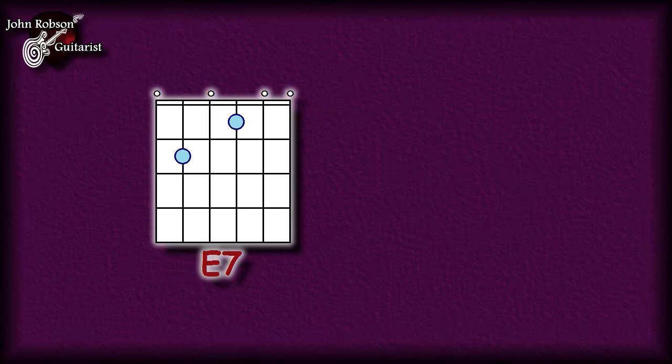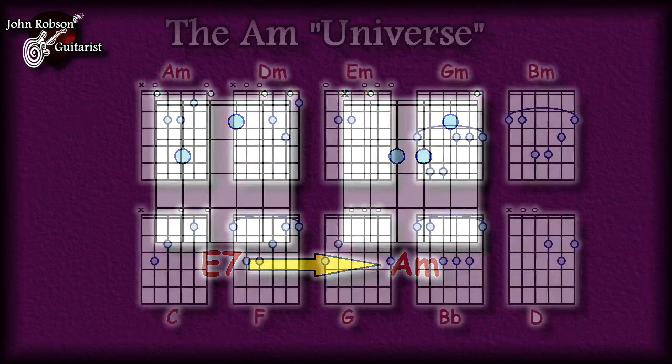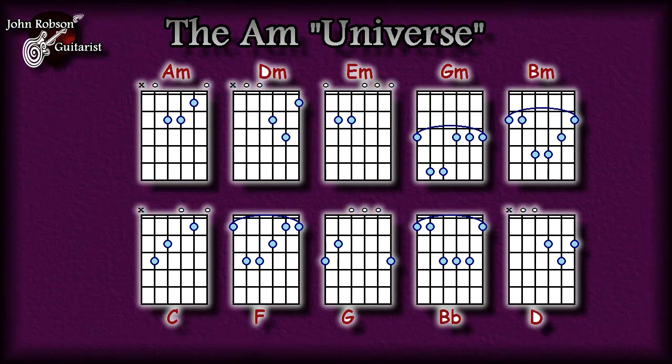Let's begin by looking at this E7 chord, and let's follow that E7 chord with A minor. And that sounds quite pleasing — very pleasing in fact. But it does present something of a theory problem, and that problem is that nowhere in the A minor universe will you find an E7 chord, or even just a plain old E chord.